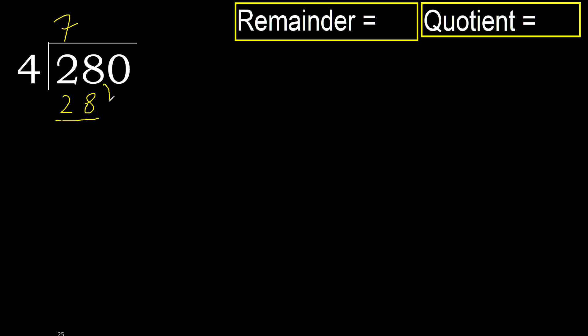Subtract: 28 minus 28 equals 0. Next, eliminate 0 on this side. 0 is less.